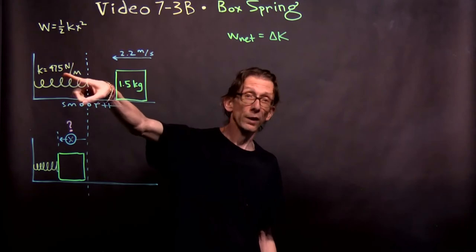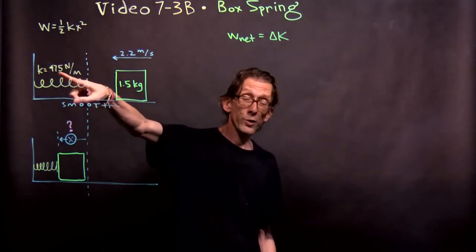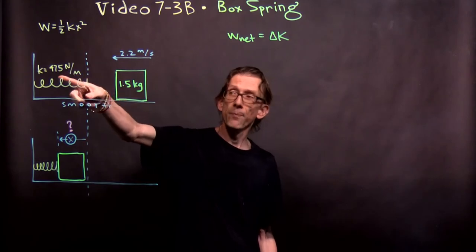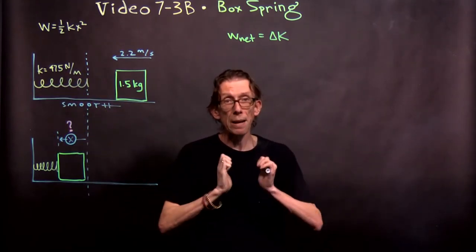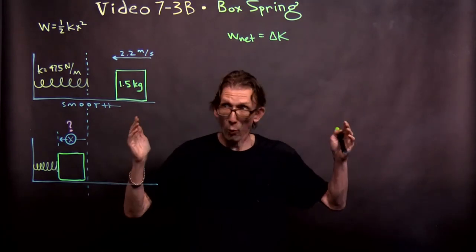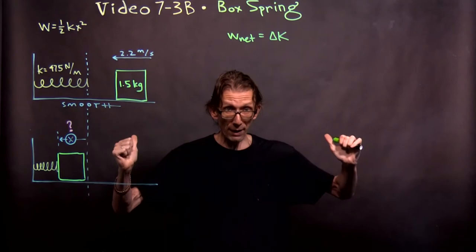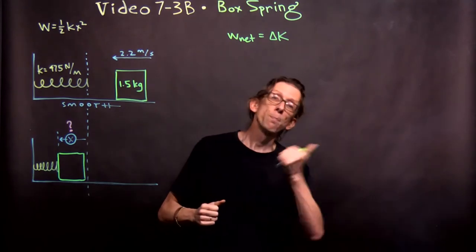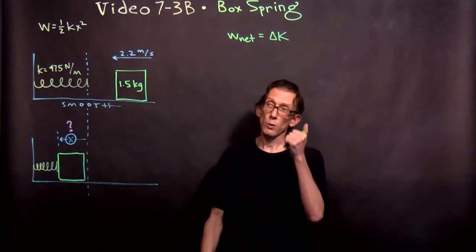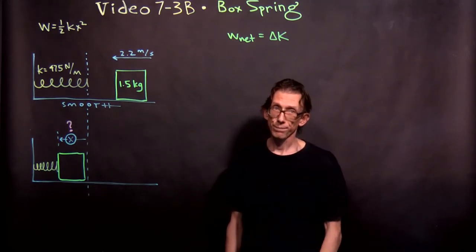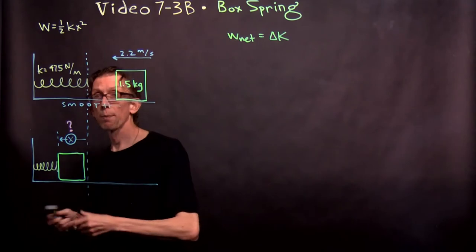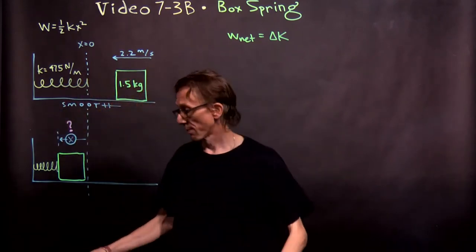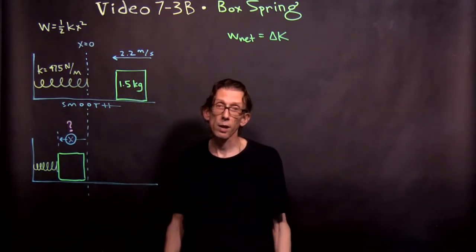What we know is that the block has a mass of 1.5 kilograms moving at a speed of 2.2 meters per second, and the spring has a spring constant of 475 newtons per meter. That spring constant is fairly large. What that number means: if you compress this spring by one meter from its equilibrium length, it's going to push back with a spring force of 475 newtons. That's what 475 newtons per meter means. And this is the equilibrium position here.